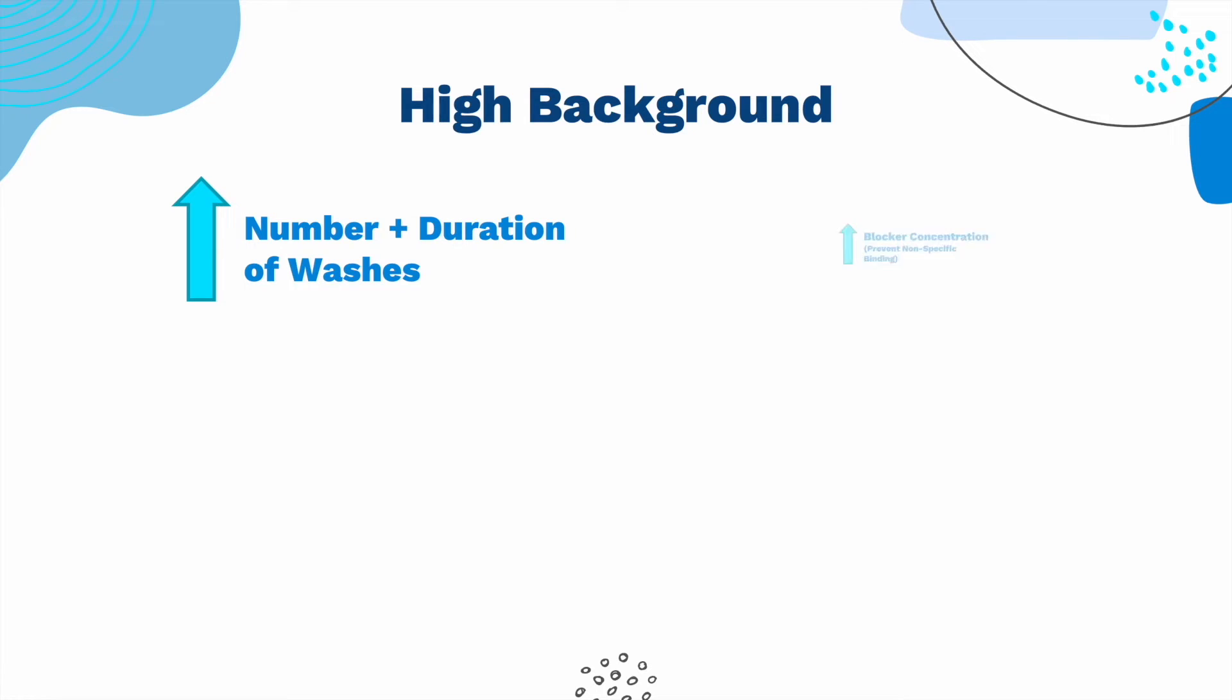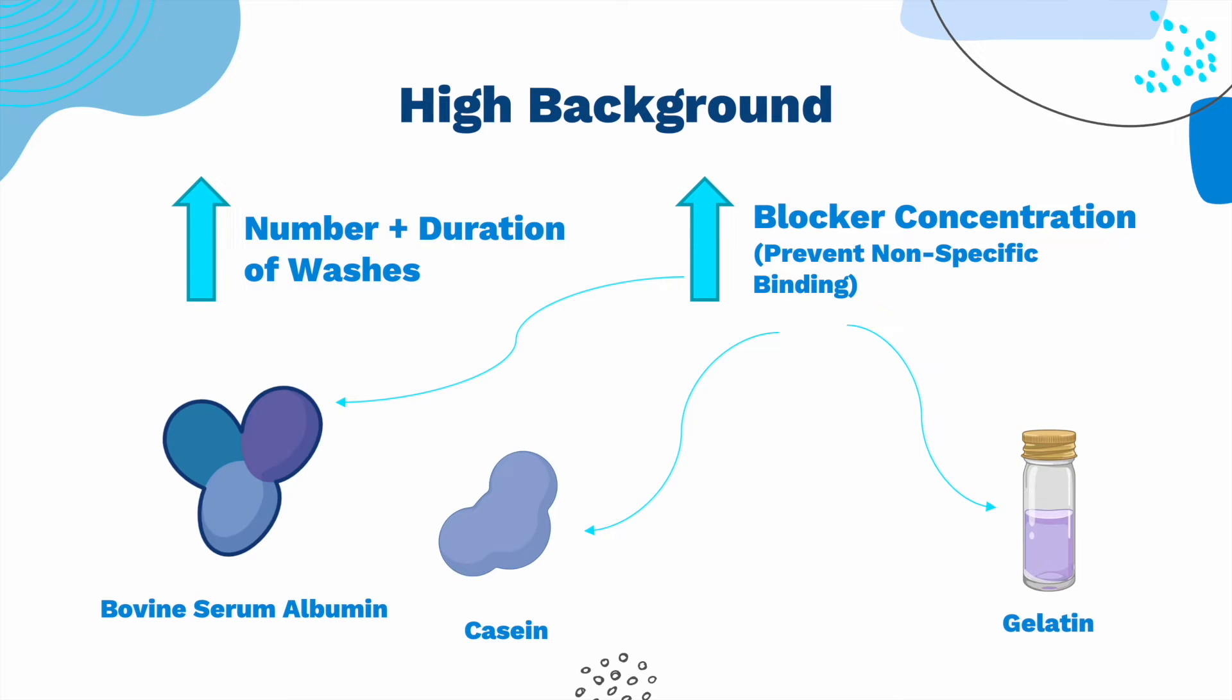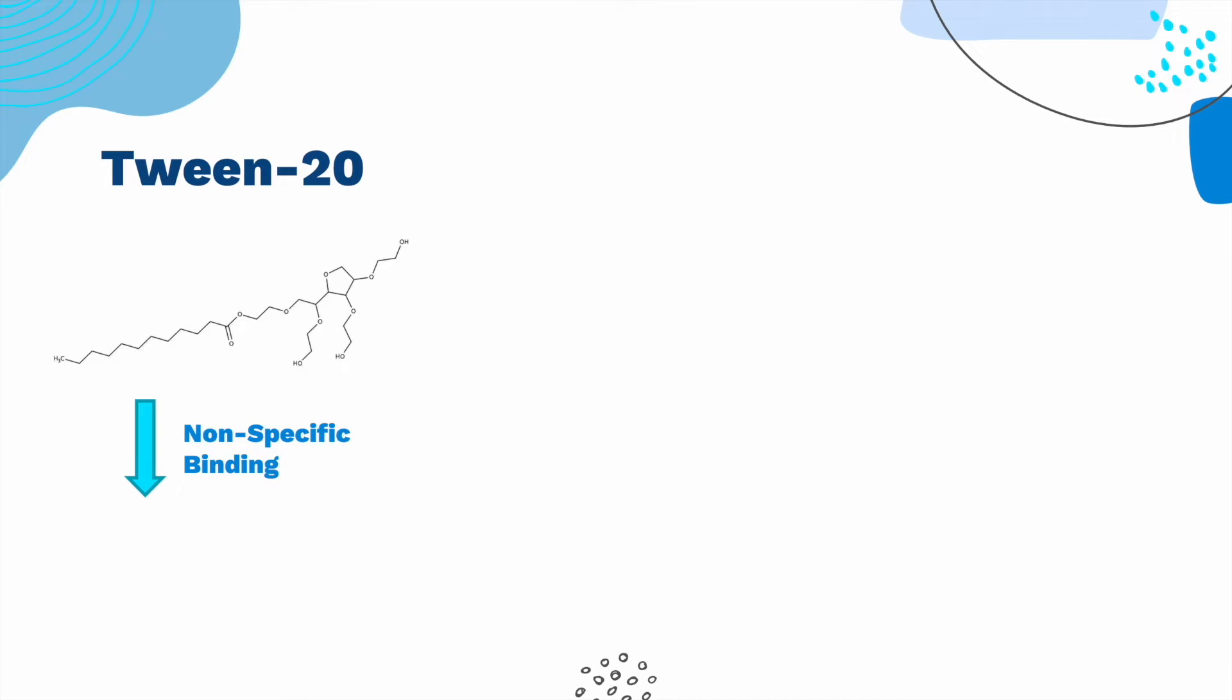You can also increase the blocking time and the concentration of the blocker. Protein blockers like BSA, casein, and gelatin bind to unoccupied sites on the ELISA plate and thereby prevent nonspecific binding. To reduce nonspecific binding, you can also use Tween 20, a non-ionic detergent at a concentration between 0.01 to 0.1%.